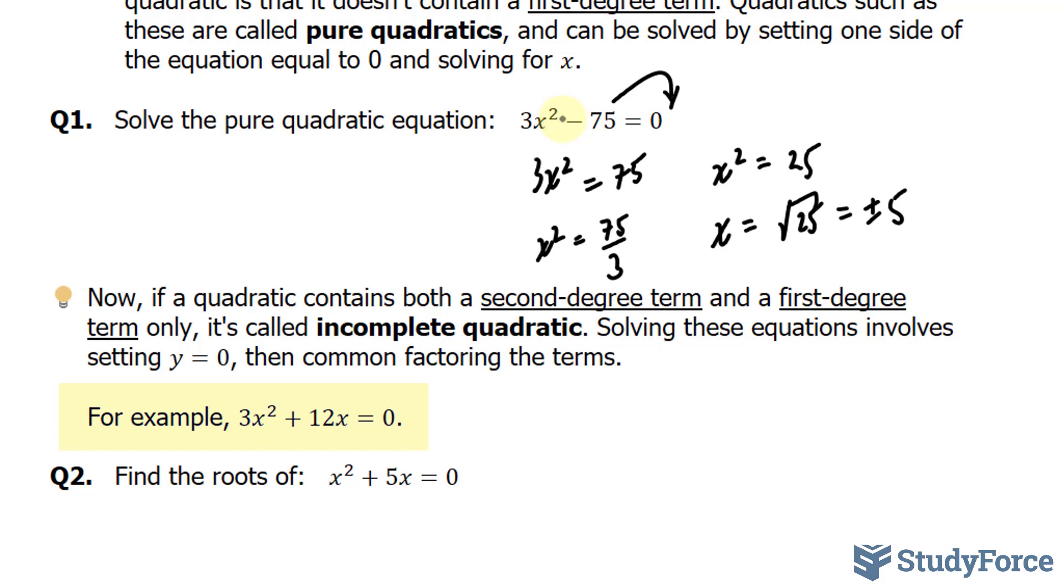Let me just repeat that. So if you have a second degree and a first degree, it's called incomplete. Solving these equations involve setting y equal to 0, then common factoring the first and second degree terms.